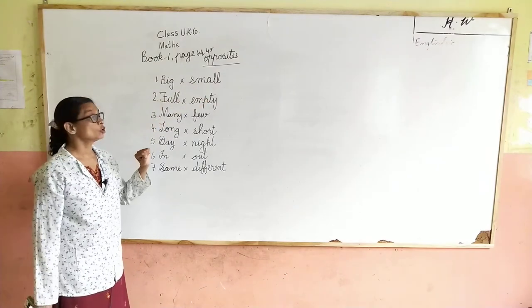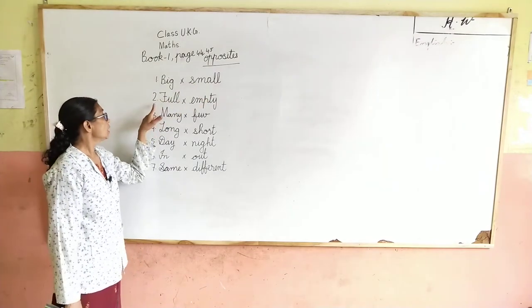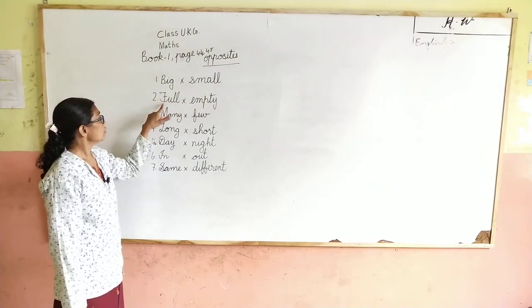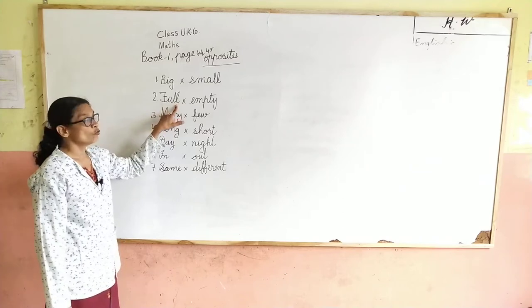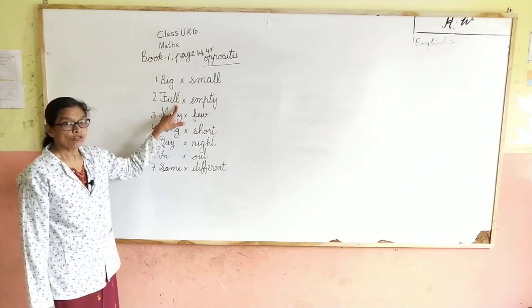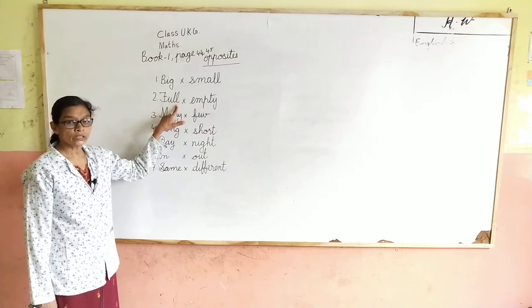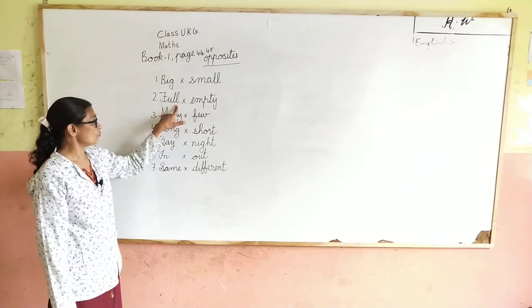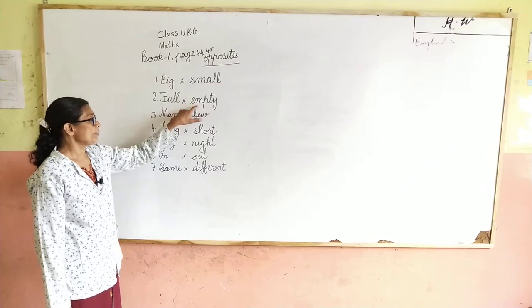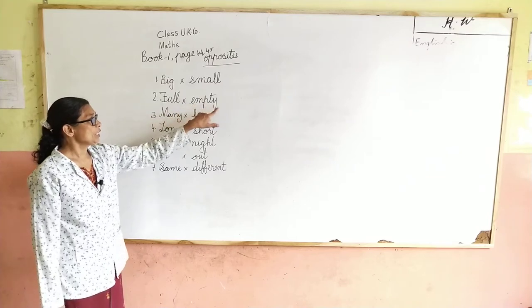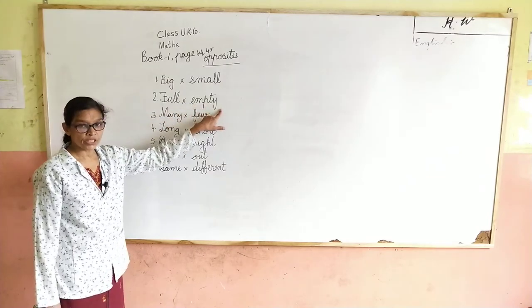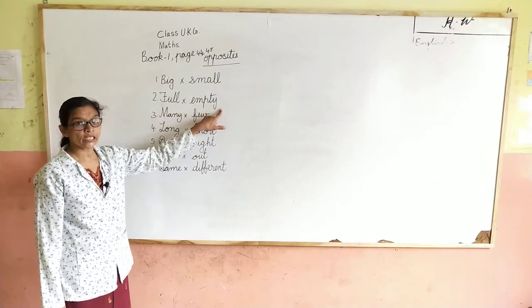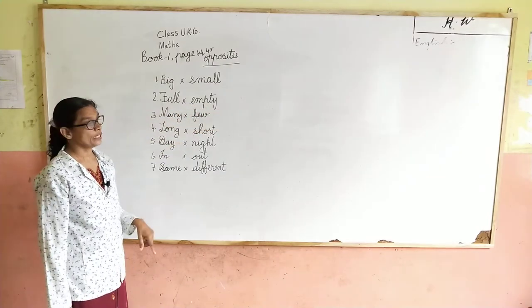Opposite means vilama sabda — ulta sabda hota hai. F-U-L-L, full. Full means joh bhara huwa — full. E-M-P-T-Y, empty. Empty means khali.